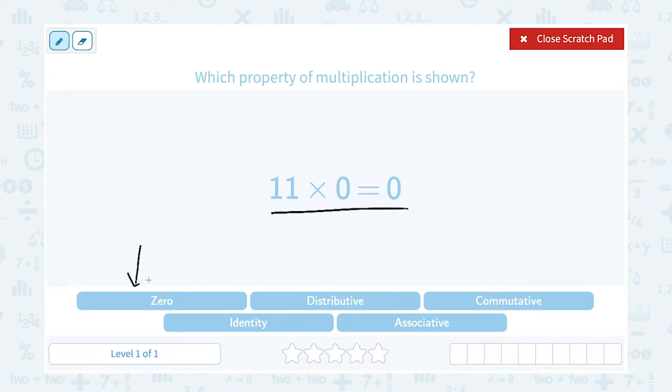The zero property of multiplication tells us that any number multiplied by 0 gives us 0 as our answer. That's exactly what they're showing here with our example of 11 times 0.